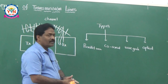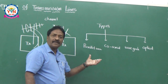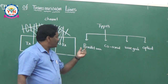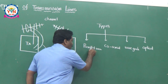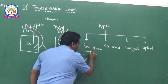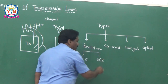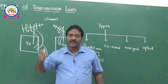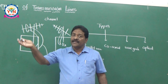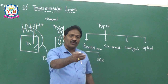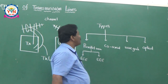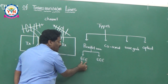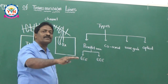Parallel wire type transmission lines — whatever telephonic communication you are doing, that is parallel wire communication. ECE people use this for signal communication, and electrical people use this for power transmission — whenever you see power lines, those are nothing but transmission lines meant for transporting electrical energy from one place to another.